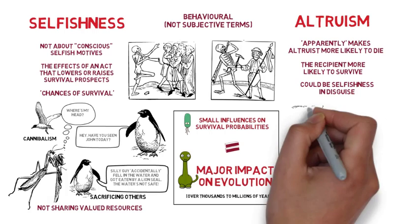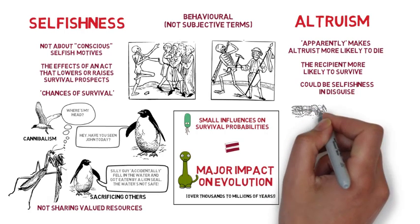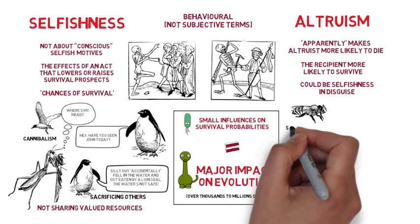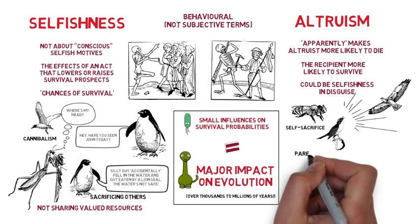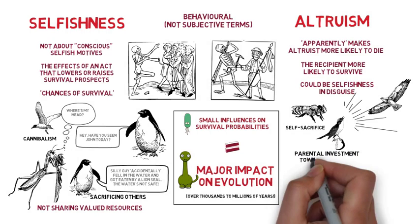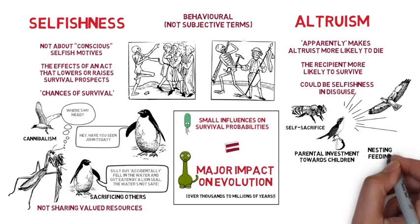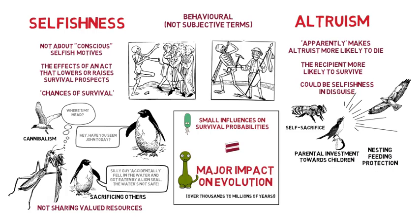Examples of altruistic behavior include the suicide of stinging worker bees against honey robbers, or small birds that give off an alarm to warn the flock of an incoming hawk but put themselves in danger of the hawk's attention. One of the most common acts of altruism is displayed by mothers towards their children through nesting, feeding, and taking risks to protect them.